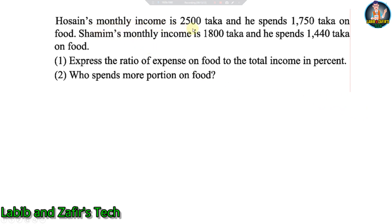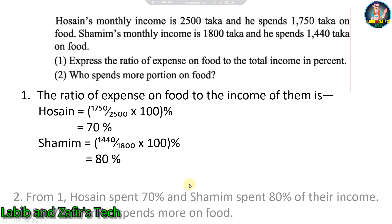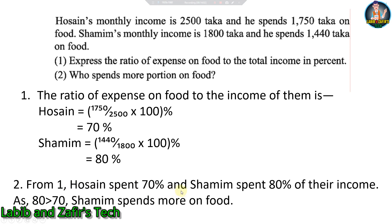Next problem: Hosain's monthly income is 2500 taka and he spends 1750 taka on food. Shamim's monthly income is 1800 taka and he spends 1440 taka on food. Express the ratio of food expense to total income as a percentage and determine who spends more. Solution: Hosain = (1750 ÷ 2500) × 100 = 70%. Shamim = (1440 ÷ 1800) × 100 = 80%. Since 80% > 70%, Shamim spends more on food.